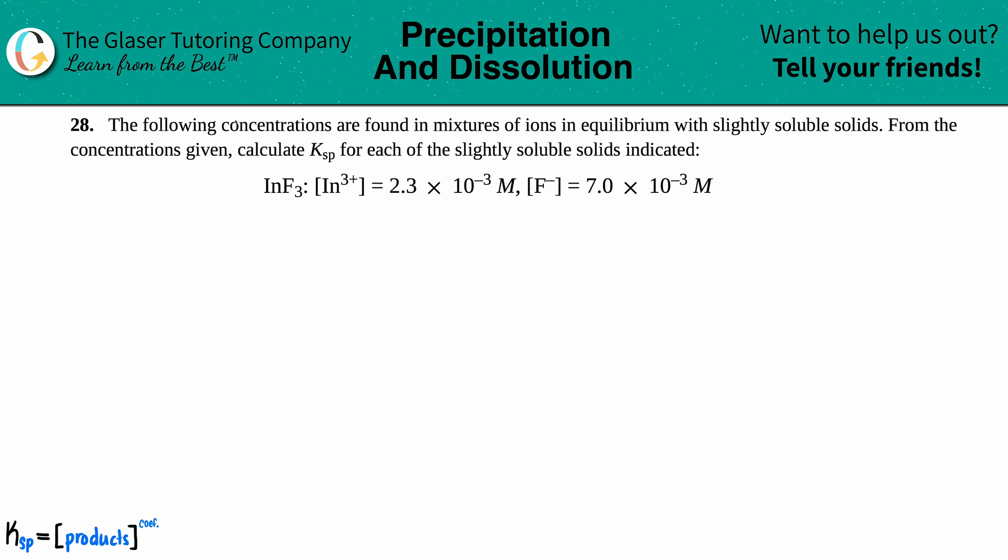Number 28: The following concentrations are found in mixtures of ions in equilibrium with slightly soluble solids. From the concentrations given, you just got to calculate those Ksps for each of the slightly soluble solids indicated. Now we have indium fluoride InF₃. They told us what the concentrations are of each ion: In³⁺ is 2.3 × 10⁻³ M and the fluoride ion F⁻ is 7.0 × 10⁻³ M.